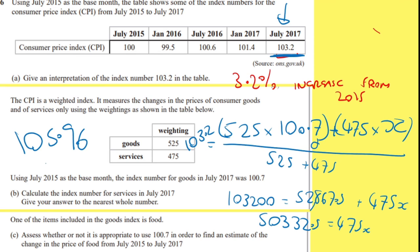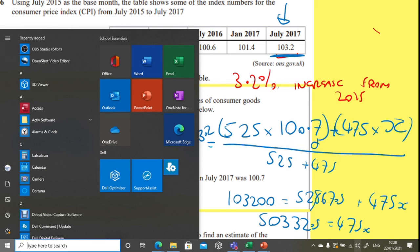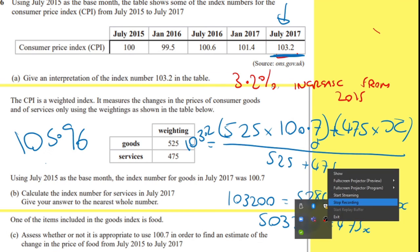One of the items included in the goods index is food. Assess whether or not it is appropriate to use 107 in order to find an estimate of the change in price of food from 2015 to 2017. This is not appropriate, really, because we don't have enough data — we know that because it's a combination of those weightings, and those weightings might change. So we can't make any assumptions.